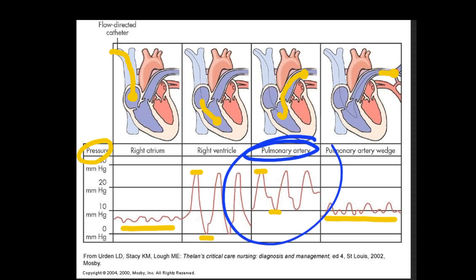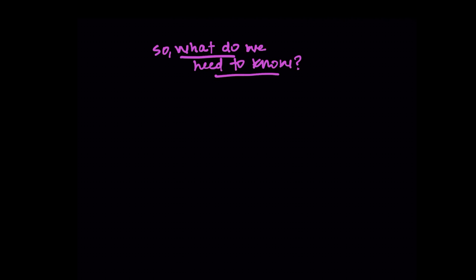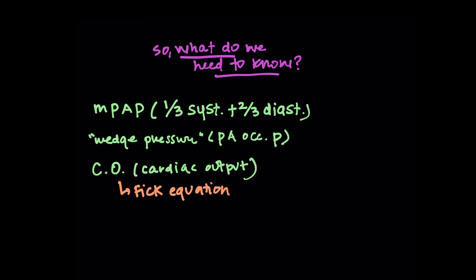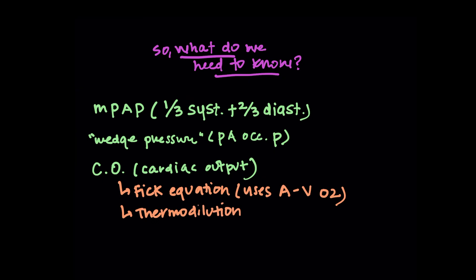The main pressure you want to look at is the pulmonary arterial pressure — it has a systolic and diastolic component, and what you want to know is the mean pulmonary artery pressure, which is one-third of the systolic plus two-thirds of the diastolic. You also want to know the wedge pressure, or pulmonary artery occlusion pressure, and the cardiac output (CO). Cardiac output can be measured two ways: by the Fick equation, which uses oxygen saturation in the artery compared to the vein, or by thermodilution, which is why there's a temperature sensor on the catheter — you measure the change in temperature in a cardiac cycle.